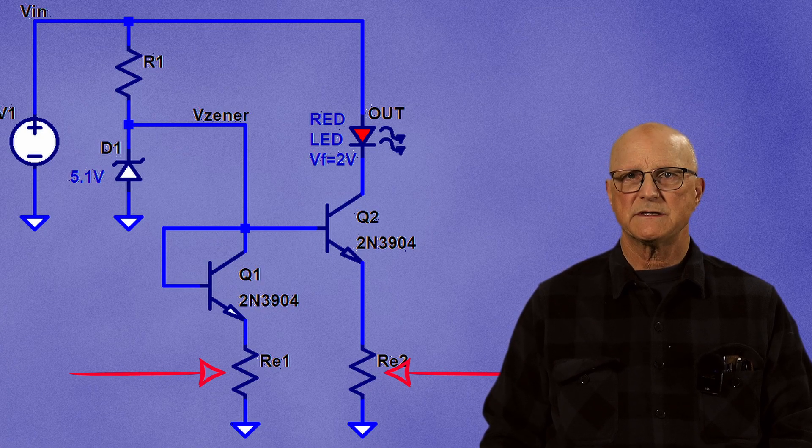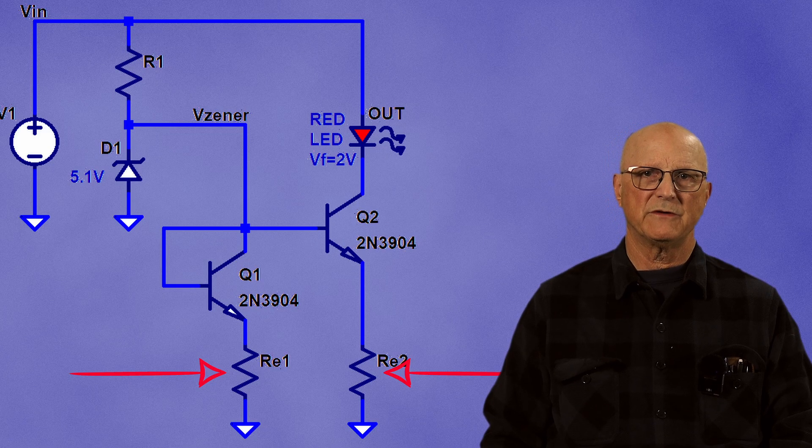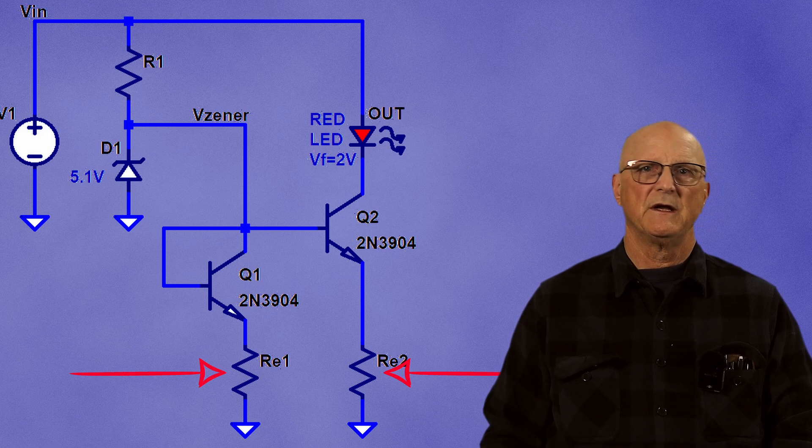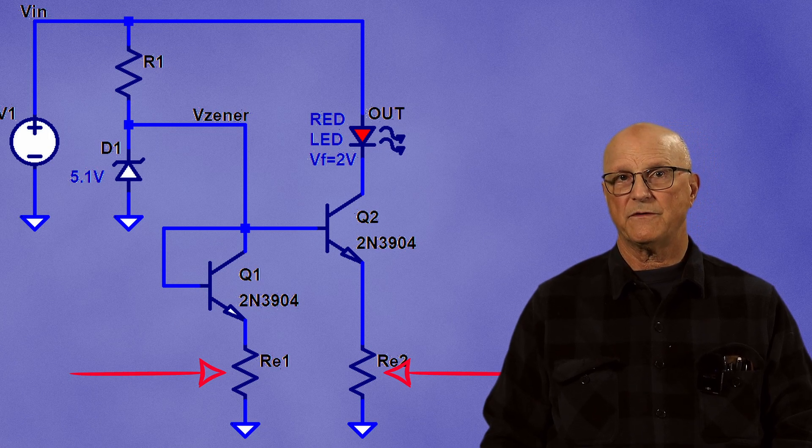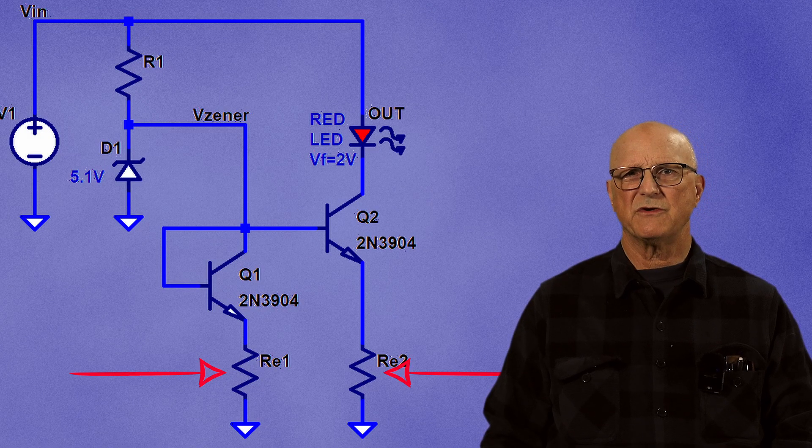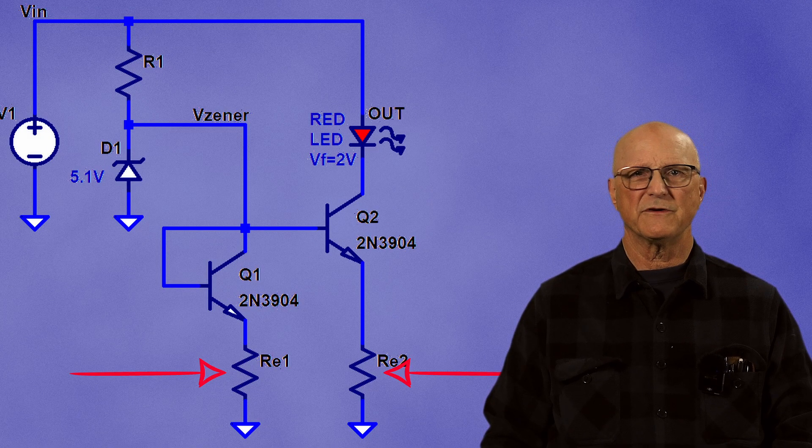The process of calculating the value of the emitter resistors remains pretty much the same as with the single transistor version. The currents are a bit different from the single transistor version, so the value of the emitter resistor is going to be a little bit different too.